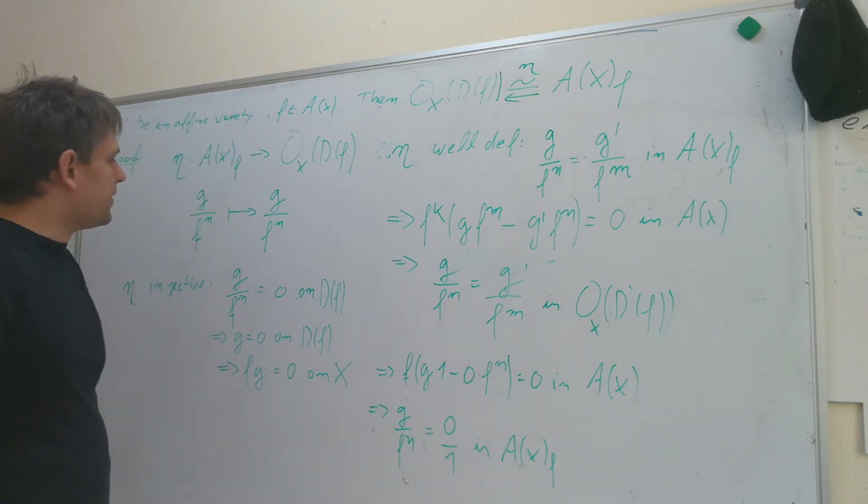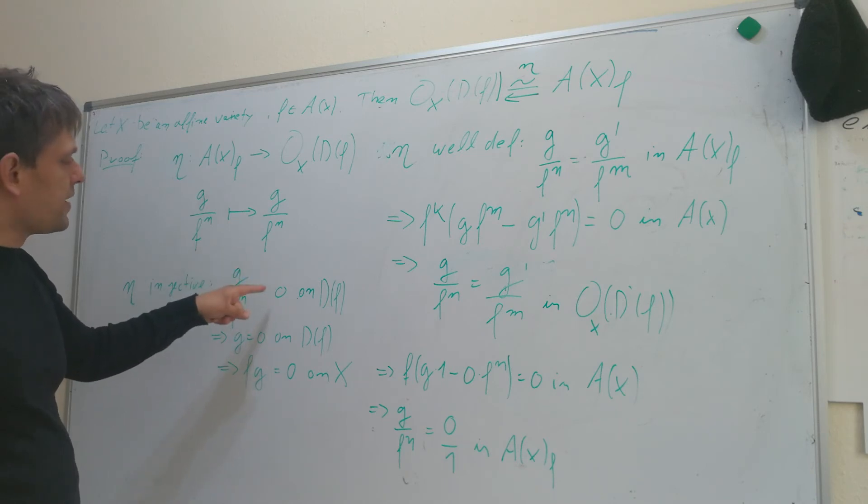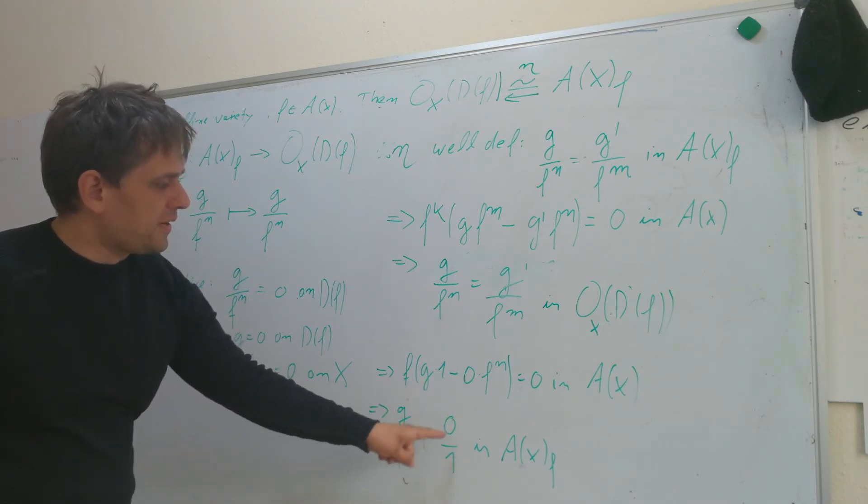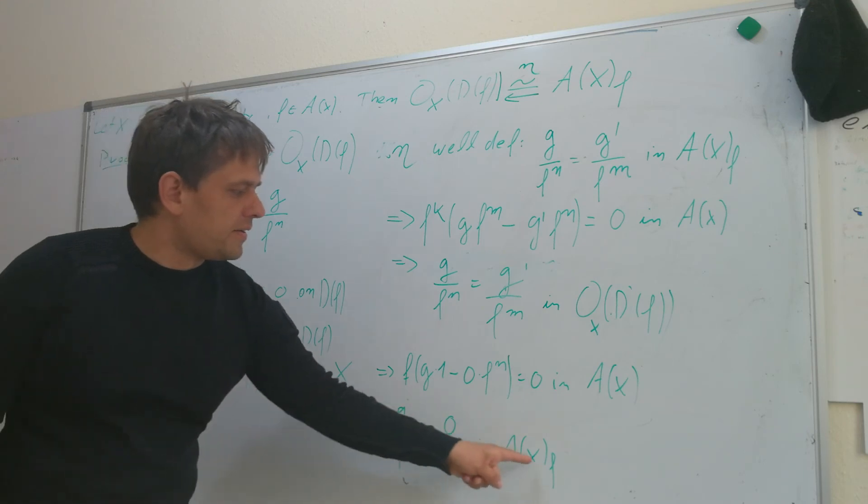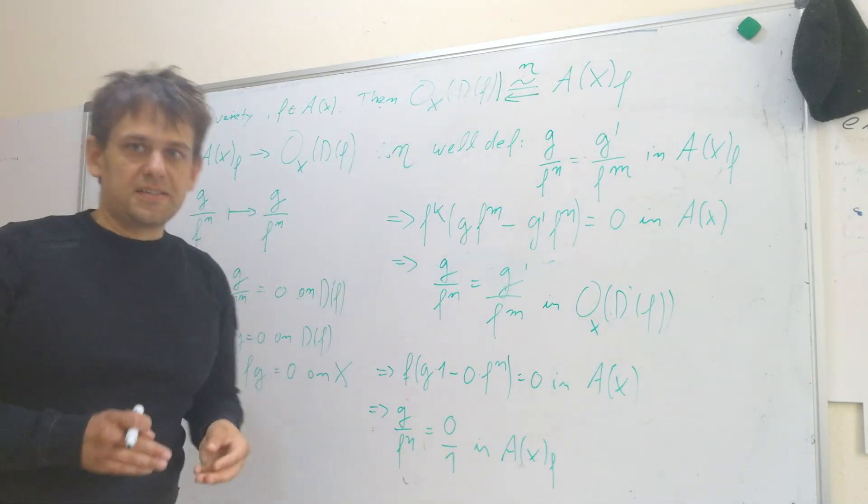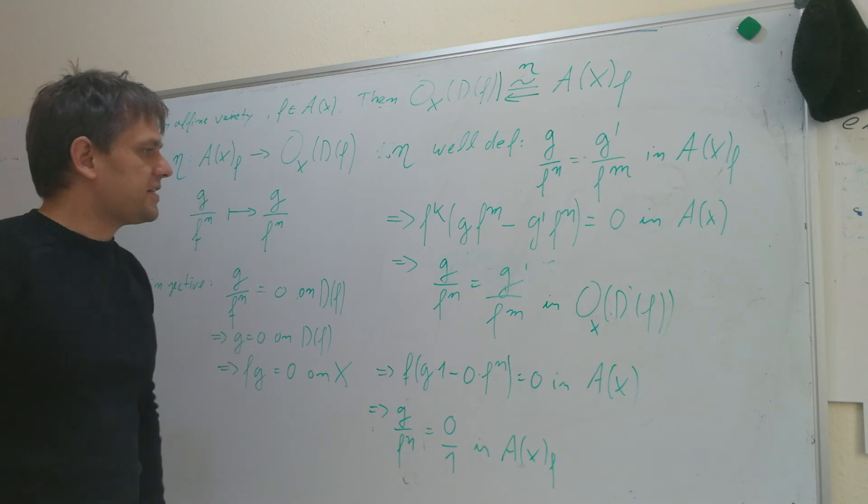But this means that g divided by f^n represents the same equivalence class as zero divided by one in this localization. So, what this shows is that if this element g/f^n gets mapped to zero, then it is really the zero in the localization. That the kernel of eta is zero, and this shows that eta is injective.